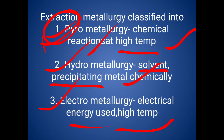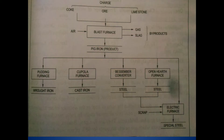Gangue is nothing but dust particles. For example, if I want only iron, I need to eliminate the remaining elements — silicon, aluminum, manganese — those elements are called gangue. Eliminating the gangue from the metal under high temperature by chemical reactions is called pyro metallurgy.